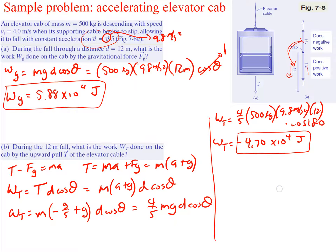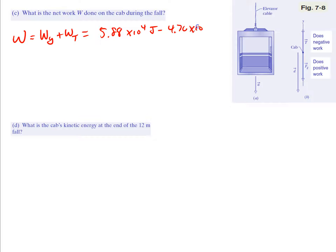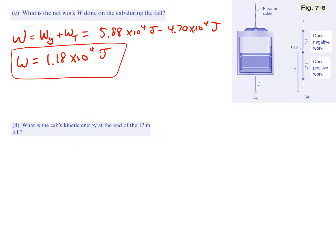Part C asks for the net work done on the cab during the fall. The net work is just the sum of all works — work from gravity plus work from tension. That equals 5.88 times 10 to the fourth joules minus 4.70 times 10 to the fourth joules, giving a net work of 1.18 times 10 to the fourth joules.